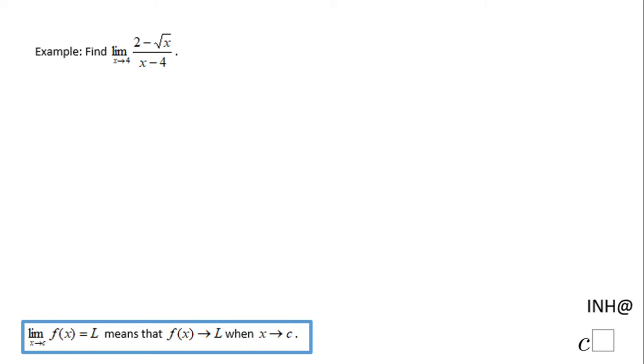Welcome or welcome back. I'm Ed, helping at C Square. In this example, we need to find this limit: limit when x approaches 4 of (2 - √x)/(x - 4). The first thing you want to do when you have to find the limit is to plug this value in and see what's going on.